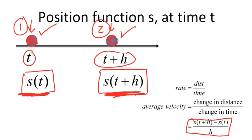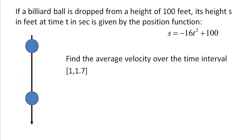Hopefully that makes sense. So here's a concrete example: we have a billiard ball — maybe the eight ball — and I drop it from 100 feet in the air. After t seconds, the position of that ball will change, and the position function tells me the position of the ball after t seconds. You give it a time and it gives you a distance above the ground. What we want to do is find the average velocity over the time interval 1 to 1.7 seconds.